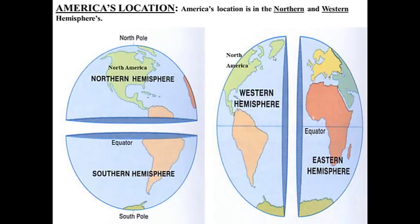The earth can also be divided into hemispheres. A hemisphere is created by cutting the earth in half, either on the equator or on the prime meridian. America's location: we are in the northern hemisphere if you cut it on the equator, as you can see in the left image. North America is also in the western hemisphere. Make sure you know the four hemispheres: the northern and southern hemispheres, and the western and eastern hemispheres.